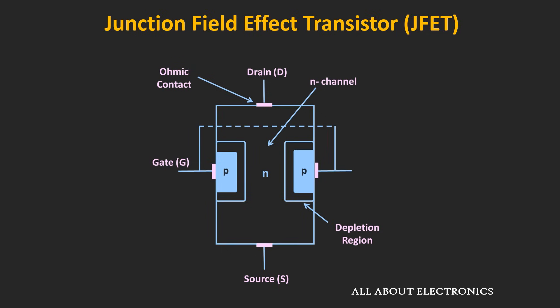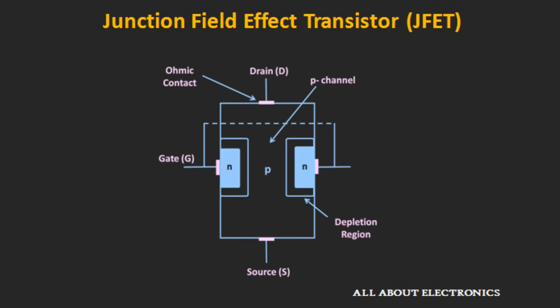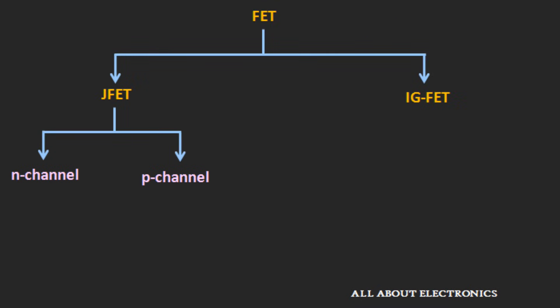If the channel is made up of N-type semiconductor, then it is known as the N-channel JFET. And likewise, if it is made up of P-type semiconductor, then the JFET is known as the P-channel JFET. So there are two types of JFET: the N-channel and the P-channel JFET.